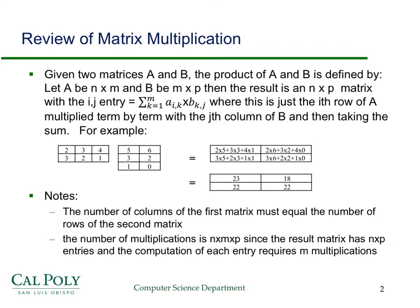As you can see, for each cell we have to do m multiplications — in other words, the number of columns in the first matrix, which equals the number of rows in the second. So we have to do m multiplications, and we have to fill in n by p entries in the resulting matrix. To reemphasize: the number of columns in the first matrix must equal the number of rows of the second matrix, and the number of multiplications is n times m times p.